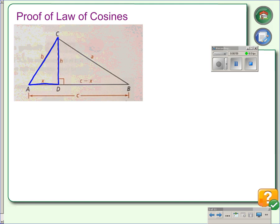In this piece of the triangle, using the Pythagorean theorem, we can say that b squared, the hypotenuse, is equal to x squared plus h squared. Just simply the Pythagorean theorem.